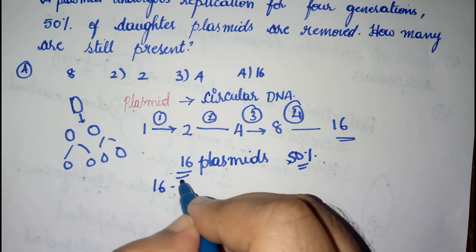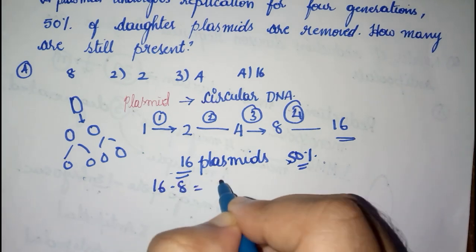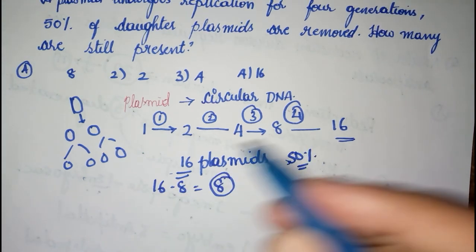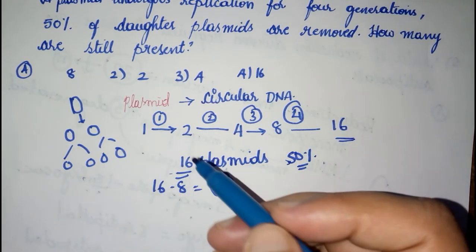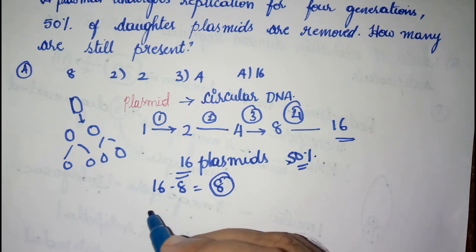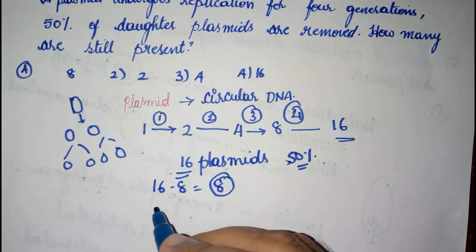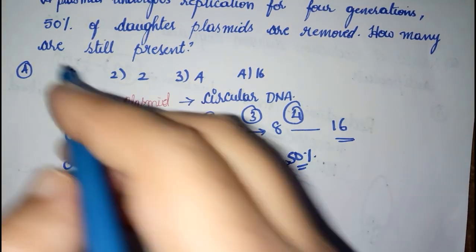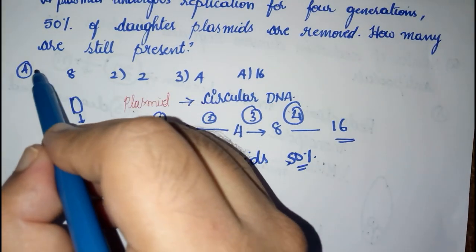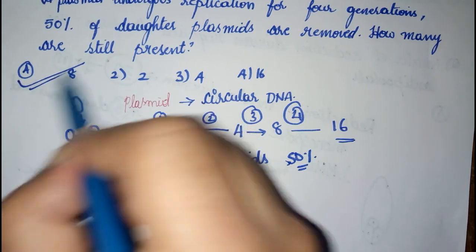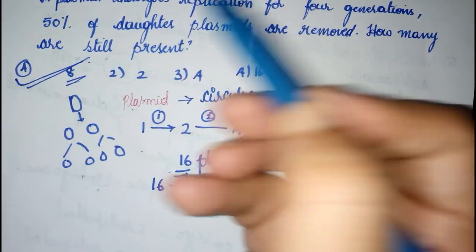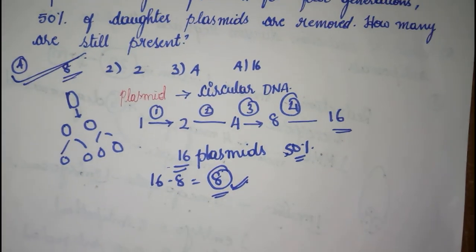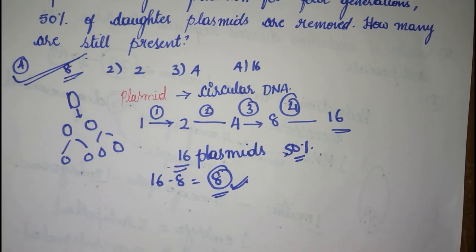Out of sixteen, eight plasmids are removed. So how many are still present? Sixteen minus eight gives you eight. Eight plasmids are still present — that is the answer. Thank you.